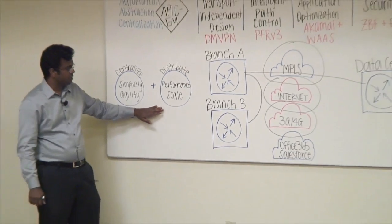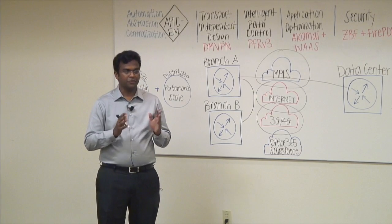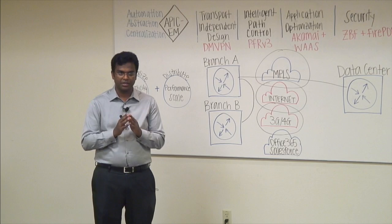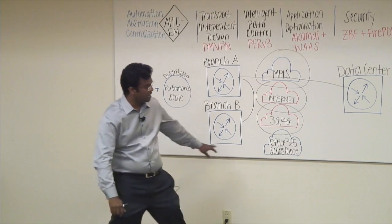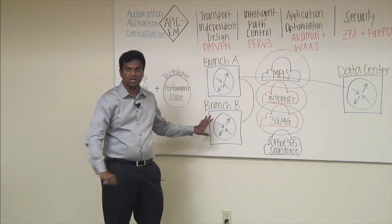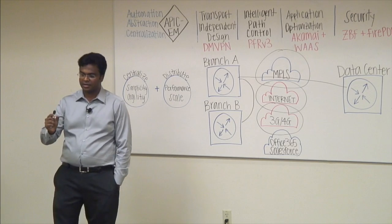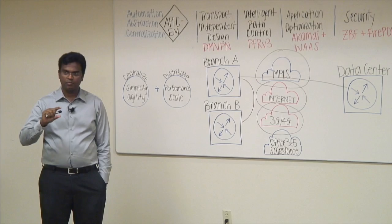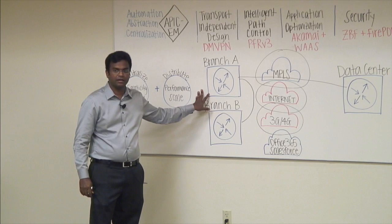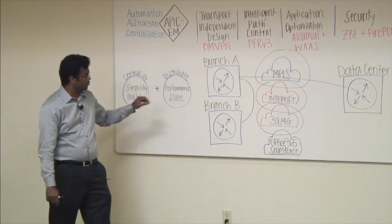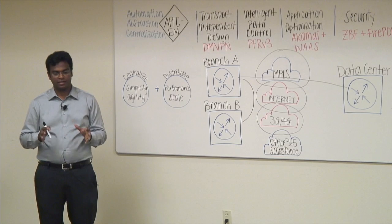This goes back to our fundamental principle: for performance and scale, the policy distribution is centralized. If you want to leverage all your links for a particular application to get maximum availability, that policy is centralized — you put it in one place. On the branch routers, all you see is one line saying 'get my policy from here.' But the policy enforcement — reacting to an outage, monitoring and reacting — that part is actually distributed. That is why I can detect outages and react in sub-second.